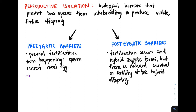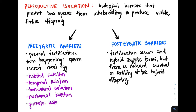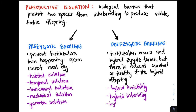There are several kinds of prezygotic barriers: habitat isolation, temporal isolation, behavioral isolation, mechanical isolation, and gametic isolation. There are also three different kinds of postzygotic barriers: hybrid inviability or reduced hybrid viability, hybrid infertility or reduced hybrid fertility, and hybrid breakdown.